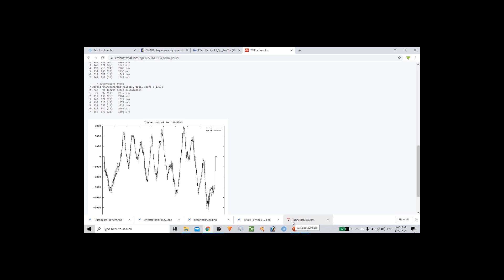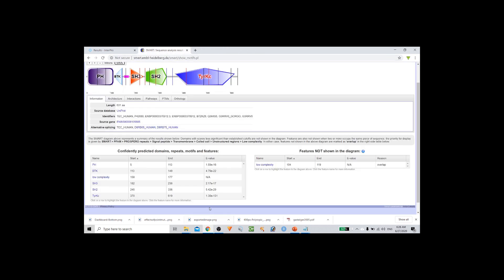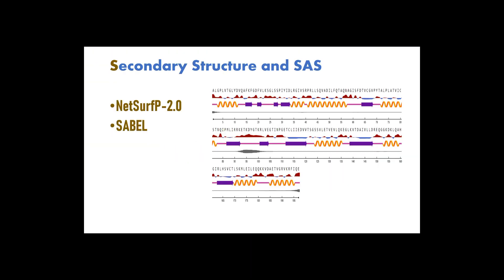We are going to discover one more tool — a secondary structural element prediction tool and also a solvent accessibility prediction tool. The solvent accessibility and secondary structure prediction tools we are going to use are two databases: one is NetSurf-P and the other is SABLE. These are two databases able to predict the secondary structure of a protein and also the solvent accessibility.